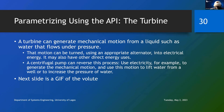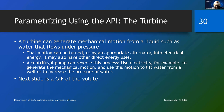We looked at how to parametrize internal combustion engine components - the moving components. So let us move to another kind of equipment: the turbine. A turbine can generate mechanical motion from a liquid such as water that flows under pressure. Once there's a liquid flowing under pressure, by proper arrangement, you can make a turbine generate mechanical motion. That mechanical motion contains energy, and that energy can be used to power an alternator and make electricity. So that motion can be turned using an appropriate alternator into electrical energy. It may also have other direct energy uses.